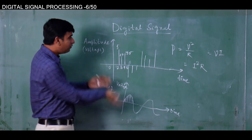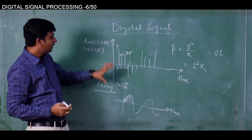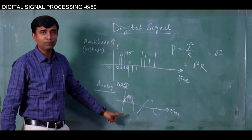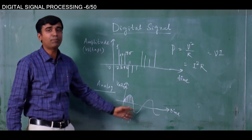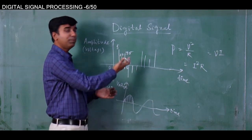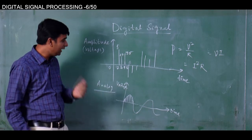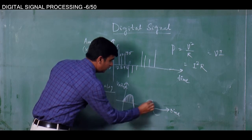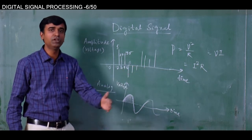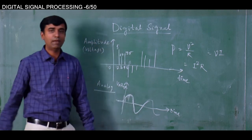That is why we have converted signals to the digital domain. Now the question arises whether this sampled signal is sufficient to reconstruct the original signal — that is one very important question. You are making an approximation by taking samples out of the original, not all of them, so as to reduce power. How many samples must you take in order to reconstruct the original signal? Suppose we take only one or two samples from the original.